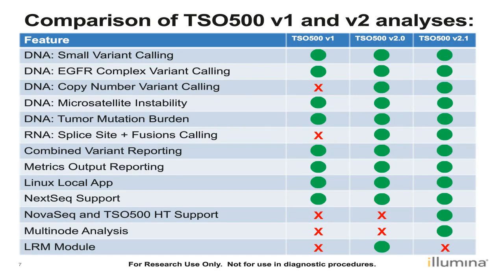If you're coming from version 1 of TSO500 analysis, version 2.0 introduces copy number variant calling to the DNA analysis pipeline as well as RNA analysis. If you were using version 1, you had to use the RNA pipeline of PST170, which is a similar panel also released by Illumina. Version 2.1 introduces NovaSeq and HT support and, for NovaSeq analyses, also allows for multi-node analyses to parallelize some of your analysis and decrease times.